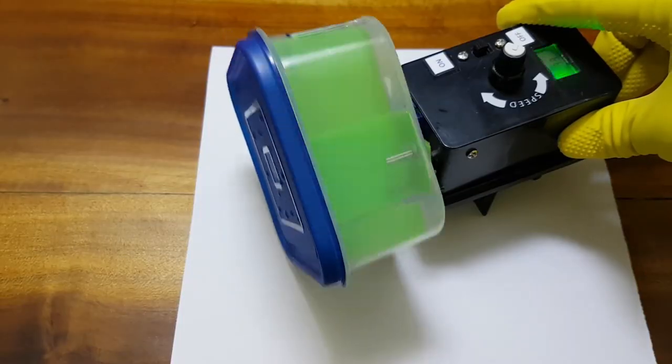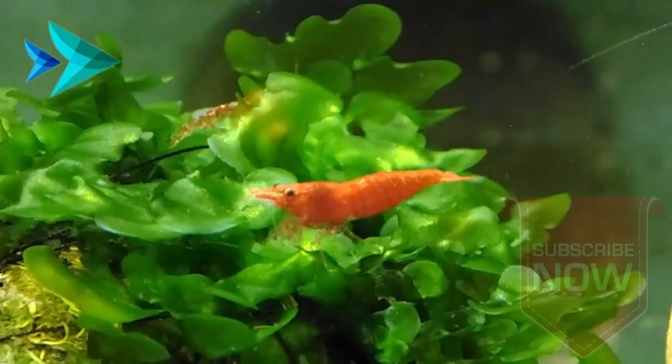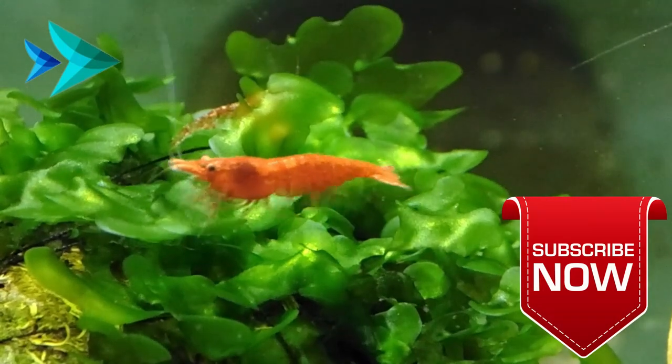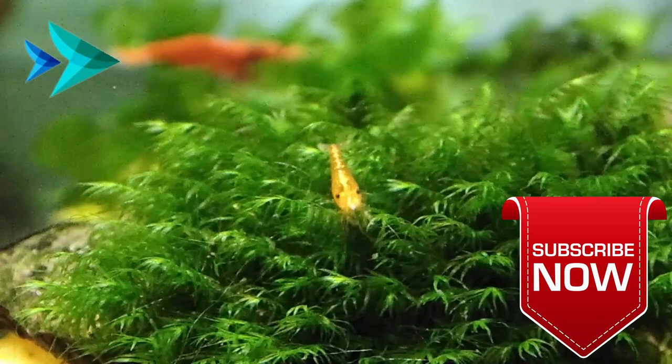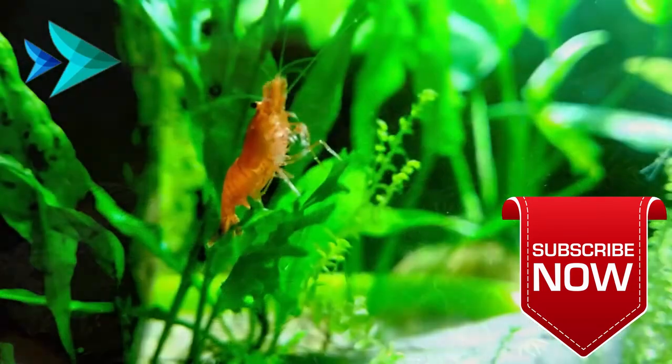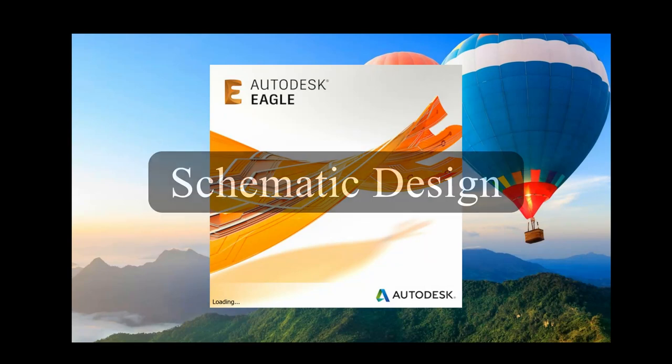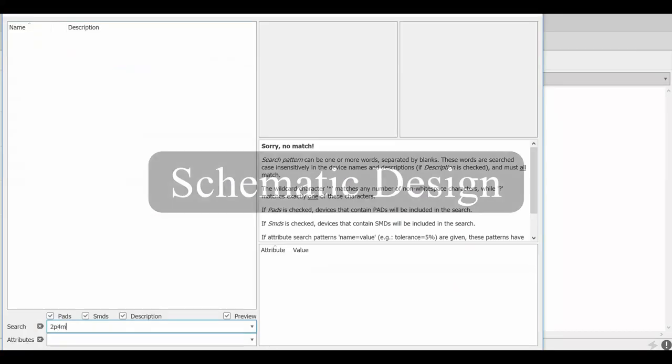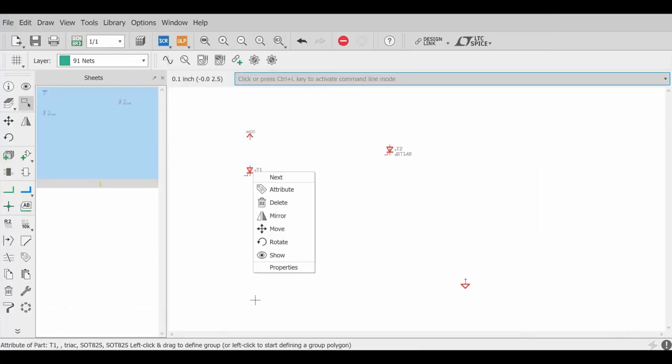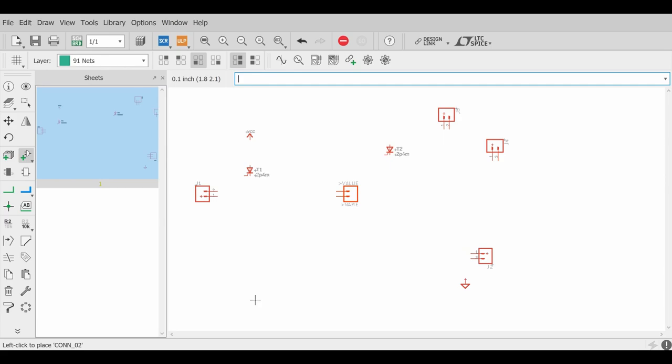I used Autodesk Eagle software to design the schematic and board for the project. It's a very professional software with a massive component library and even allows for installing new components which can be easily found online.